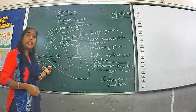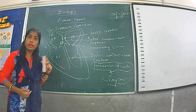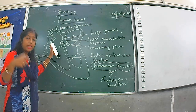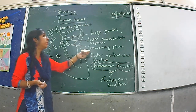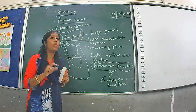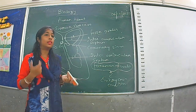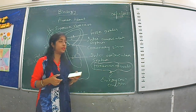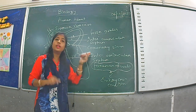The inferior vena cava carries deoxygenated blood from the lower part of the body into the right auricle. The superior vena cava takes blood from the upper part of the body and pumps it into the right auricle. The coronary sinus brings deoxygenated blood from the walls of the heart into the right auricle.